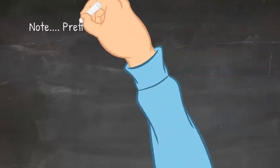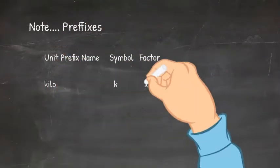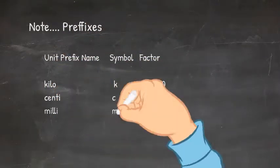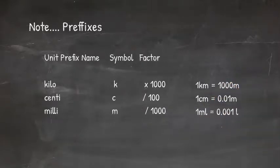So we need to make a quick comment about prefixes. In your GCSE, there will be three prefixes you will commonly come across. Kilo, centi and milli. Kilo means a thousand. So if you see one kilometre, you need to multiply it by a thousand to get the value in metres.